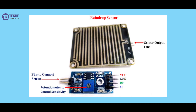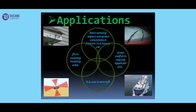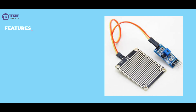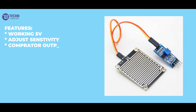You can see here a potentiometer connected. The use of the potentiometer is to control the sensitivity. Now, talking about the board and its features: the working voltage is 5 volts, and the potentiometer adjusts the sensitivity. The comparator output provides a clean voltage waveform with good driving ability.